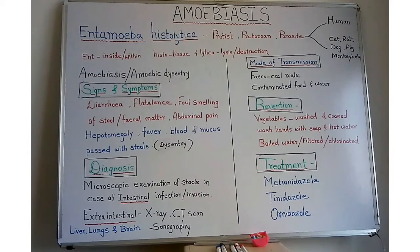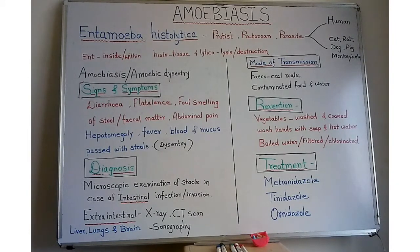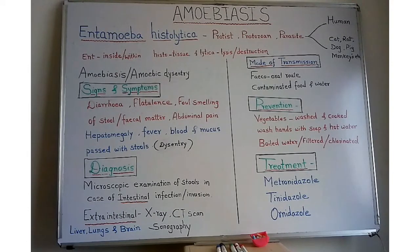The disease caused by this causative agent is called amoebiasis or amoebic dysentery. The mode of transmission of Entamoeba histolytica is through the feco-oral route. 'Feco' means fecal matter or stools of an infected person, 'oral' means mouth, and this route is called the feco-oral route.